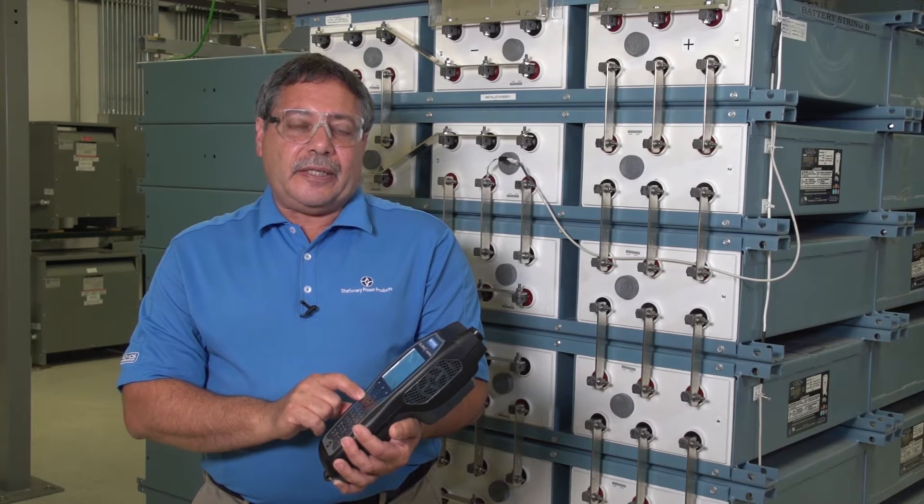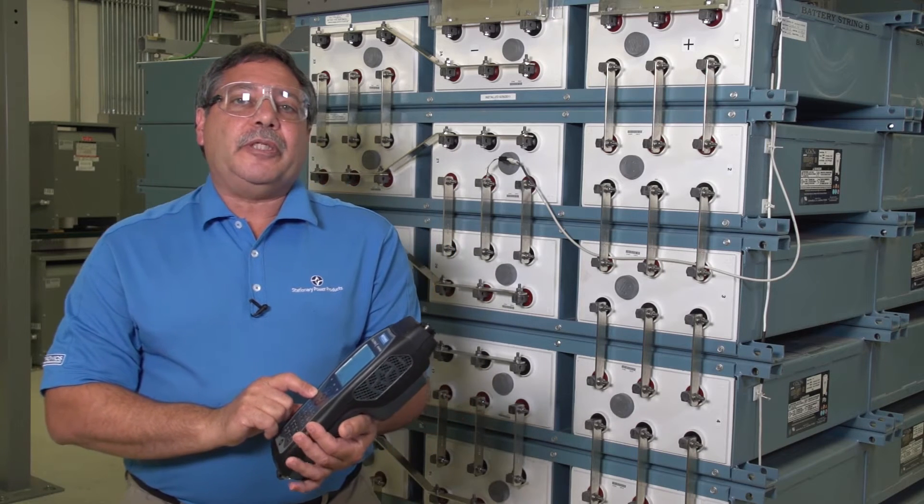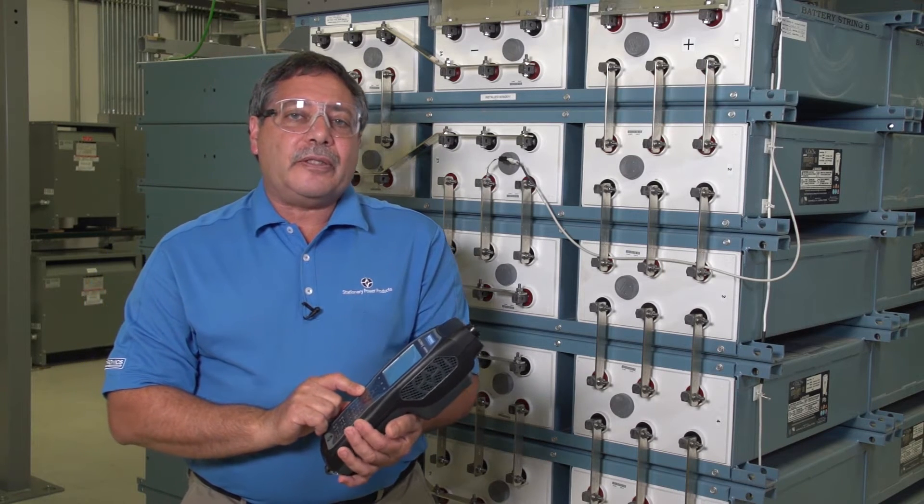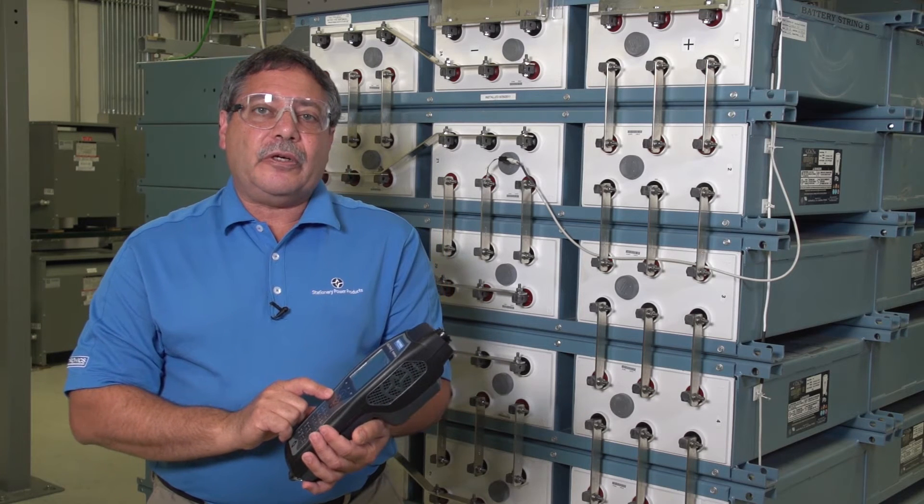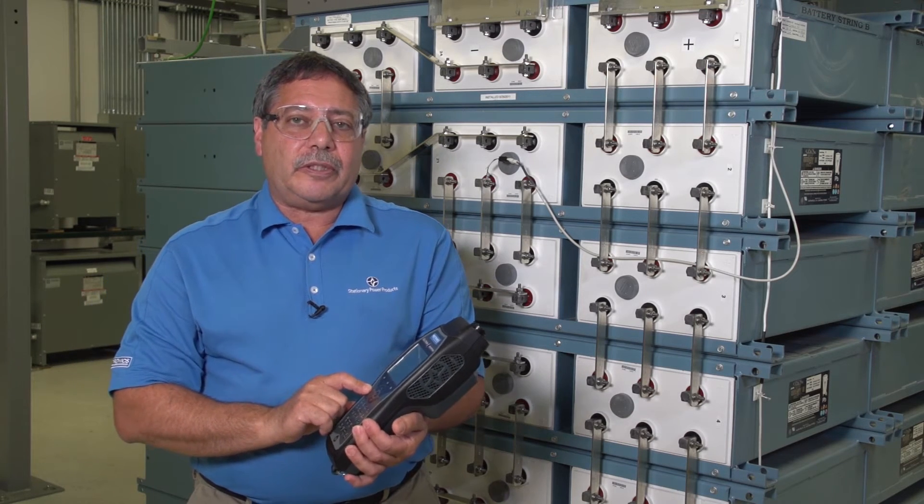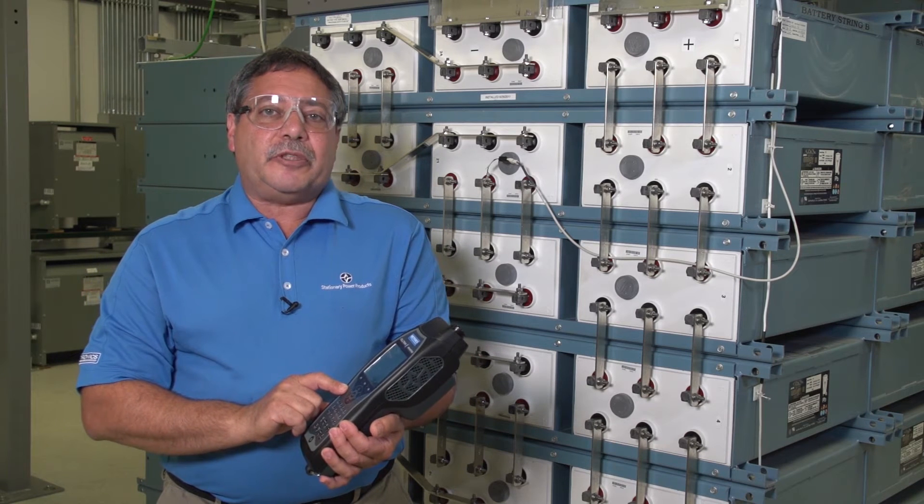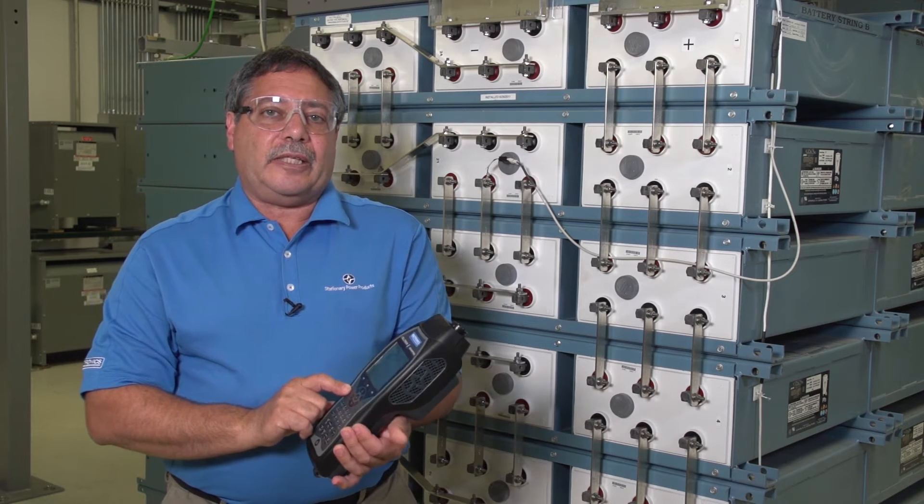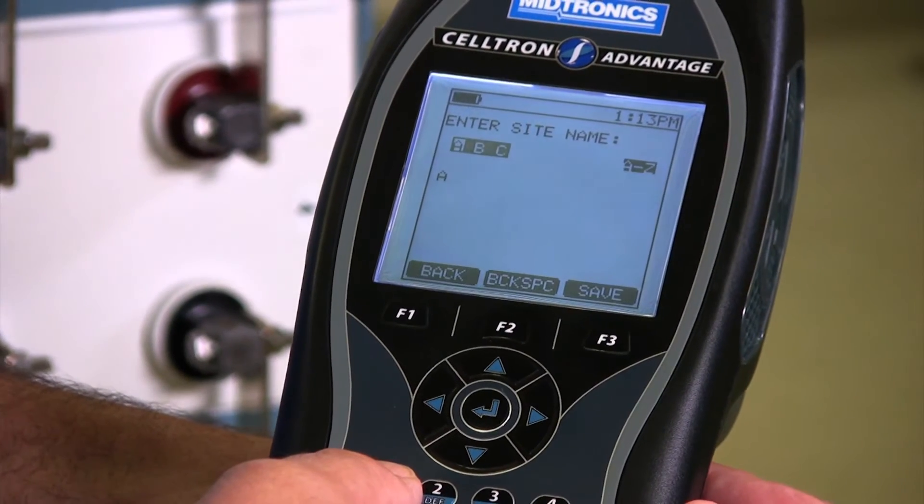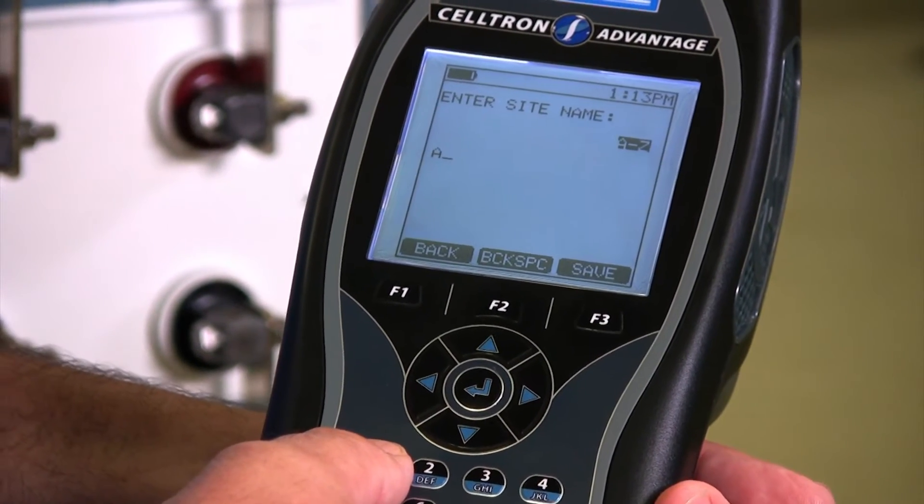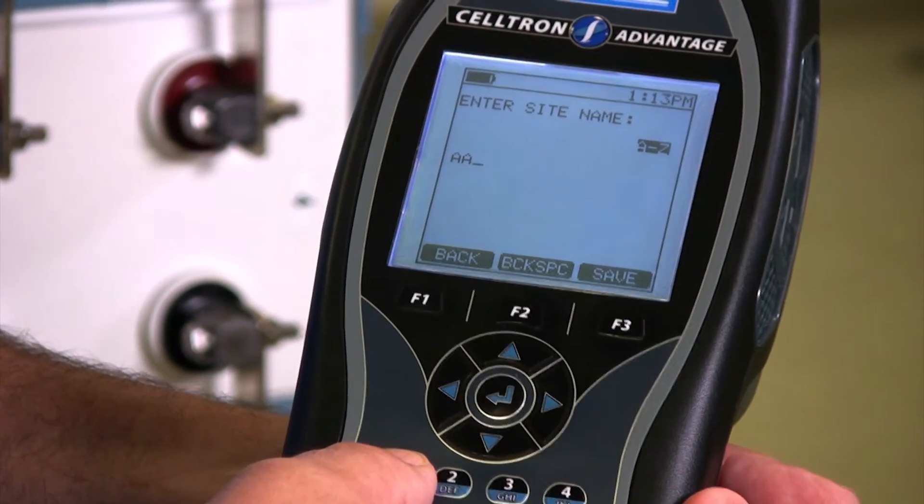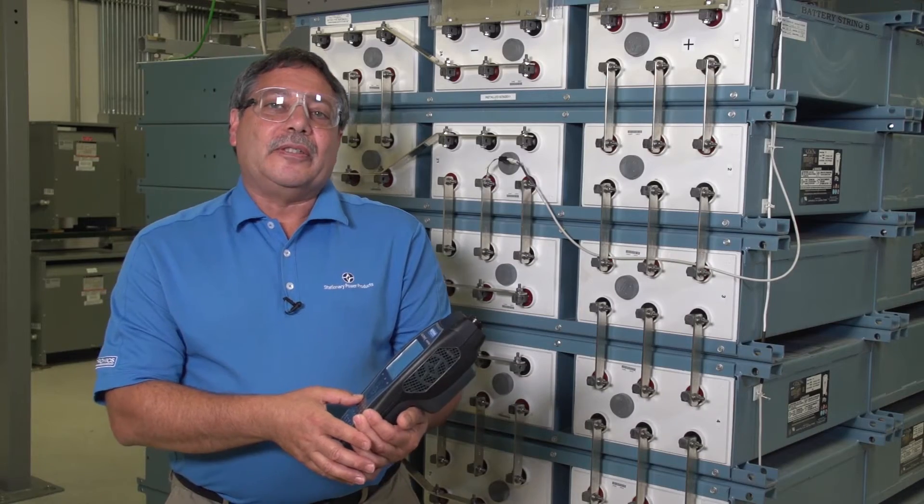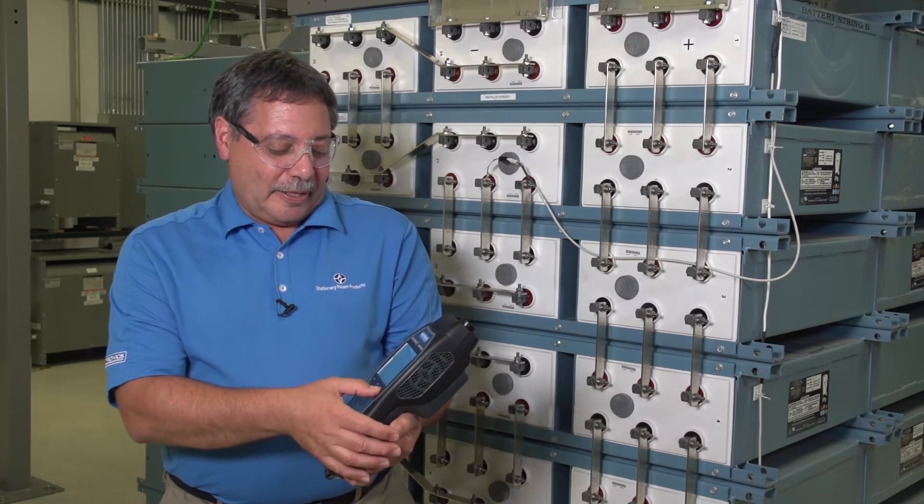First you're going to enter the site name. That site name could be whatever your company's policy is for their naming convention. If you use CLLI codes you could put the CLLI code in there. If you use names of the site you could put the name of the site. I'm going to just put in site AAA for today's purpose and then I'm going to hit save.